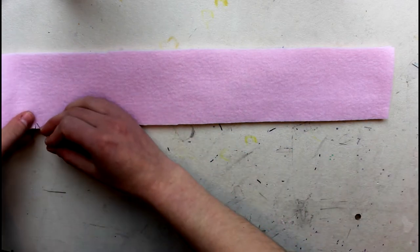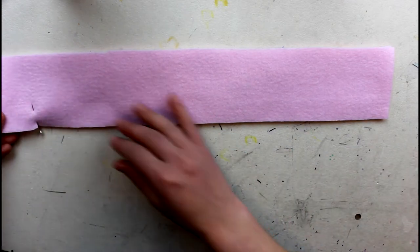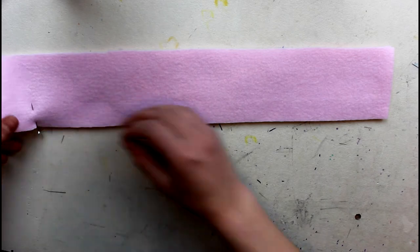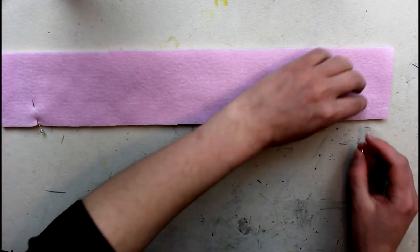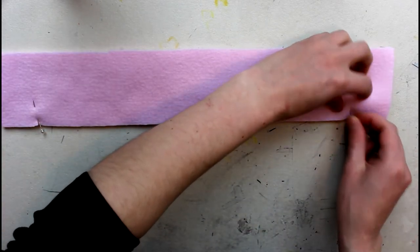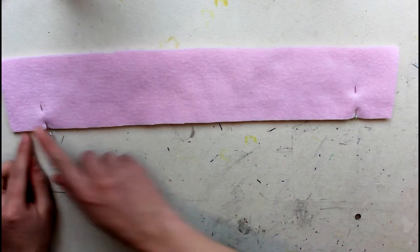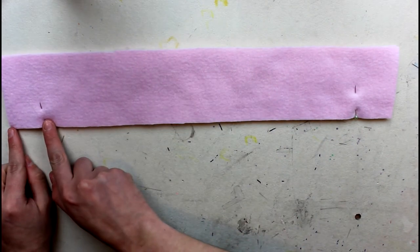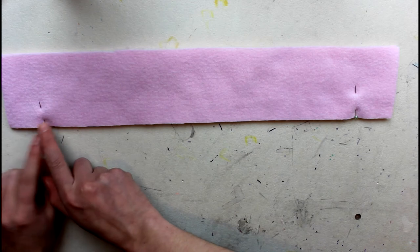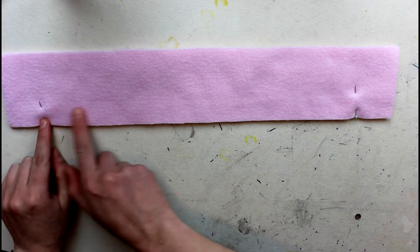We're going to sew along the long edge. From one side to the first notch do a regular straight stitch, then in between do a basting stitch which is basically a long straight stitch, a temporary stitch, and then go back to regular size.